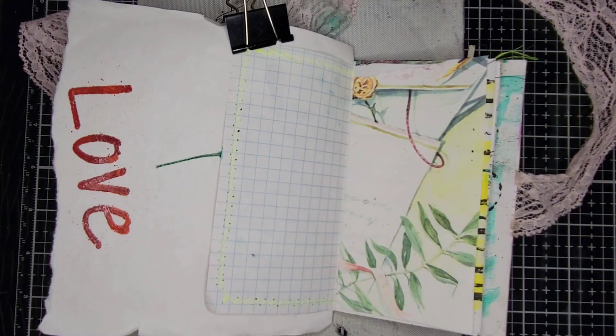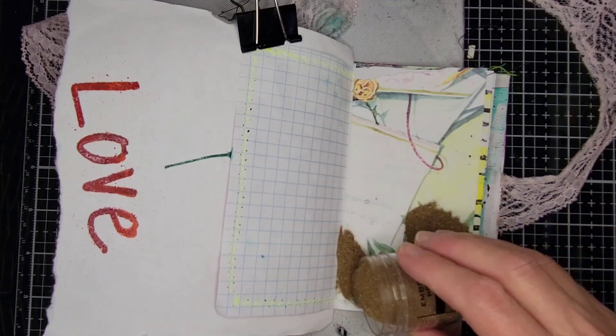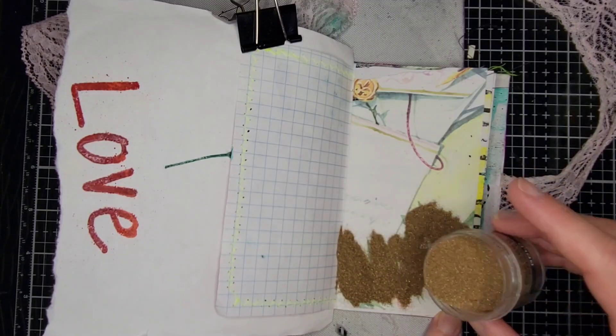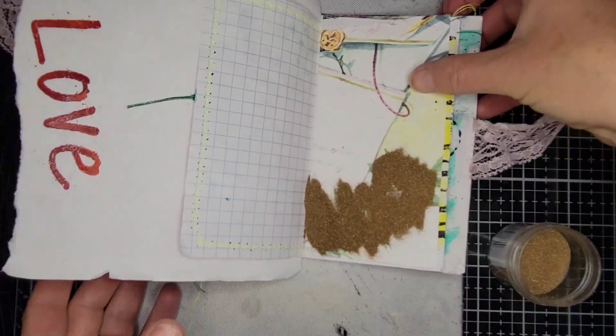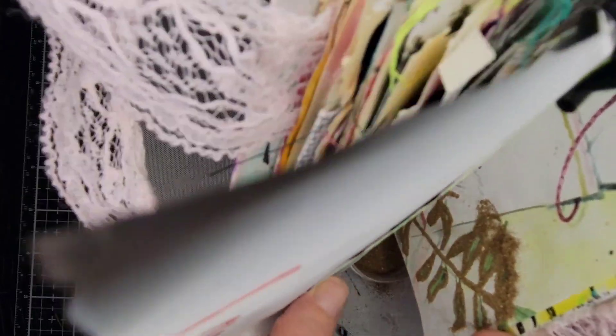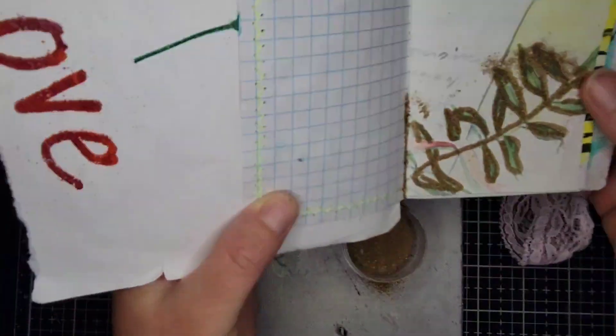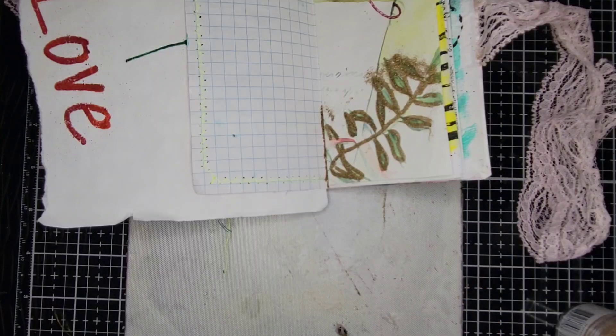So I opened to the page that I was going to create in and I decided I really liked that leaf that was already on the page that I had as one of the signatures in my art journal. And so I thought, oh maybe I'll just grab some of my embossing powder and see how that works on the page.